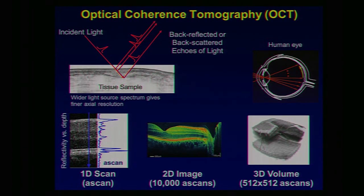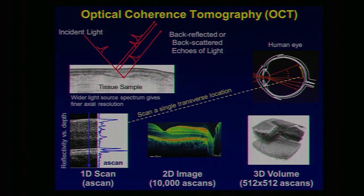If you shine light on a tissue sample, that light bounces off the different layers of the sample. Applying specialized detection methods and processing techniques, you can figure out the time and magnitude of these echoes of light. Shining a single spot onto a tissue specimen — in this case, the human eye — gives a reflectivity versus depth profile called an A scan. This is the basic building block of three-dimensional OCT images, and A scans per second is a good measure of OCT imaging speed.